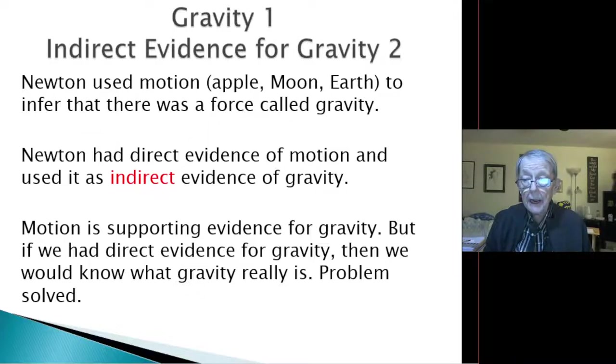And he used it as indirect evidence of gravity. He says it appeared to him, analyzing it, that all those motions could be caused by the one and same function of gravity. Motion is supporting evidence for gravity. But if we had direct evidence of gravity, then we would know what gravity really is. And of course, the problem solved.